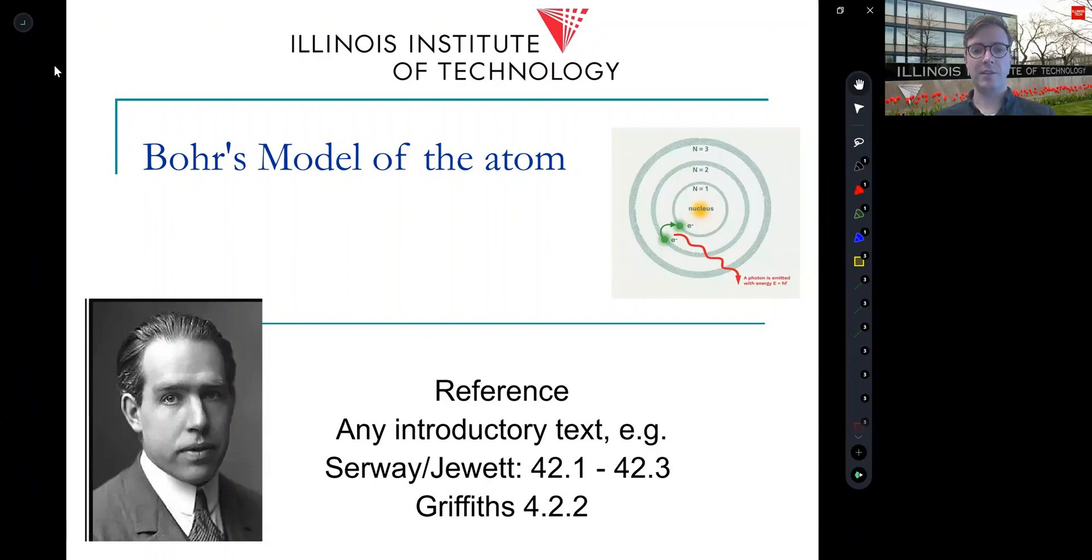Hello, everyone. In this lecture, I want to talk about one of the first steps that was taken towards quantum mechanics, and that's Bohr's model of the hydrogen atom. If you need a reference for where some of this stuff comes from, basically any introductory physics text is good. I've got one of them at the bottom here, and then you can also take a look at Griffith's quantum mechanics section 4.2.2.